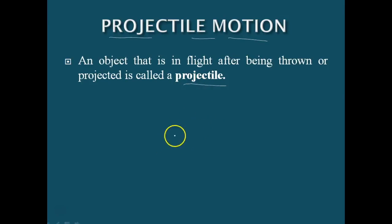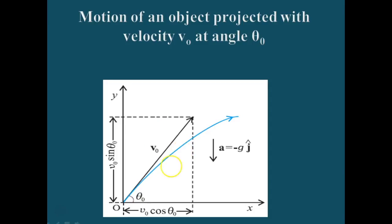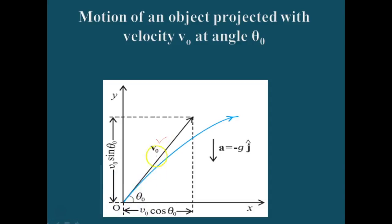We can consider a simple figure to understand this, and we assume that air resistance is negligible. The projectile is launched with a velocity V0 that makes an angle theta0 with the x-axis.